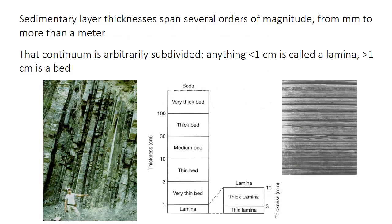Sedimentary rocks are nearly always layered, at some scale at least. As we saw in the previous set of slides, that layering arises because of changes in the flow velocity, and therefore changes in the type of sediment that it's able to transport. The thicknesses of sedimentary layers can range from millimeter scale, or even less, to several meters, although most are on the order of a few centimeters to maybe a meter in thickness.